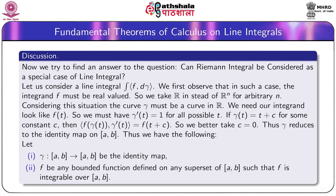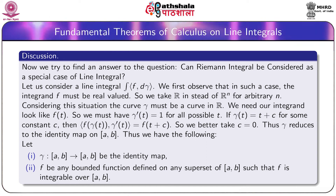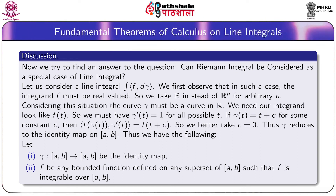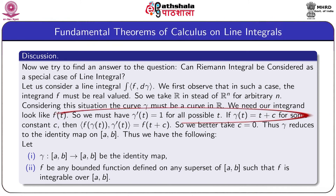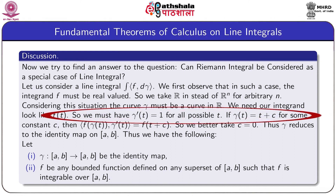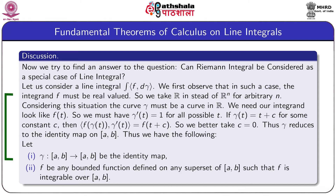So we take R instead of R^n as the codomain of F, and the curve gamma must then be a curve in R. We need our integrand to look like F(t), so we must have gamma-dash(t) equal to 1 for all t. If gamma(t) equals t plus c for some constant c, then the inner product of F(gamma(t)) and gamma-dash(t) equals F(t + c). We take c equal to 0, so gamma reduces to the identity map on the bounded closed interval [a, b].